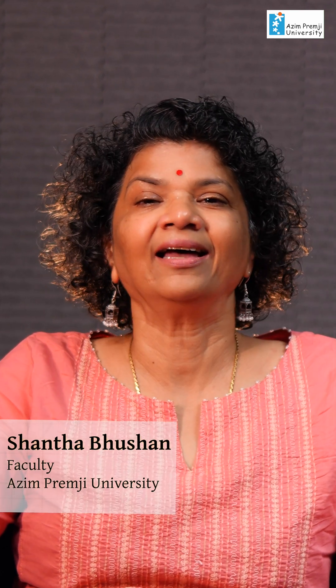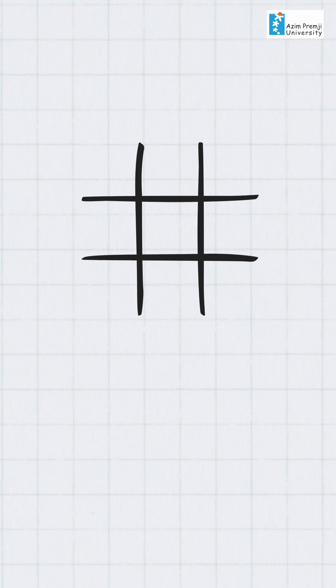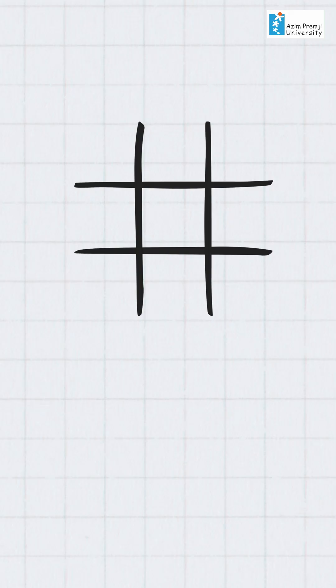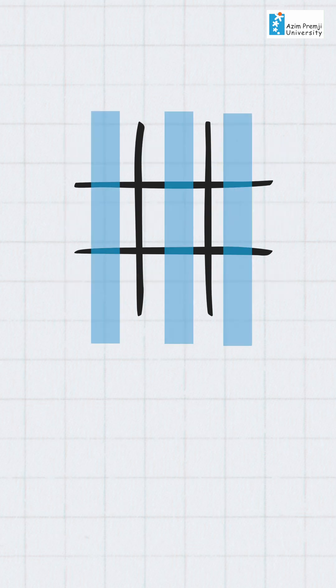Hi, I am Shanta Bhushan and I teach Mathematics at Azeem Premji University. So everybody knows the game of tic-tac-toe. Now we change the game: there is only one player and the player has to mark a cross and a nought in each row and in each column exactly one.